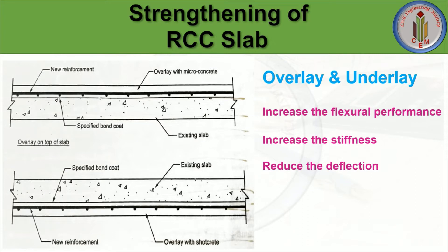Now let's discuss underlay and overlay. This strengthening technique increases the flexural performance of the slab, increases stiffness, and reduces deflection. As we can see in the picture, if the negative bending moment — that is, hogging bending moment — is more, then we need to do strengthening at the top of the slab, which is called overlay. We insert new reinforcement on top and then place concrete above it. If the positive bending moment or sagging bending moment is more, we do the underlay — adding reinforcement at the bottom of the slab followed by concrete.